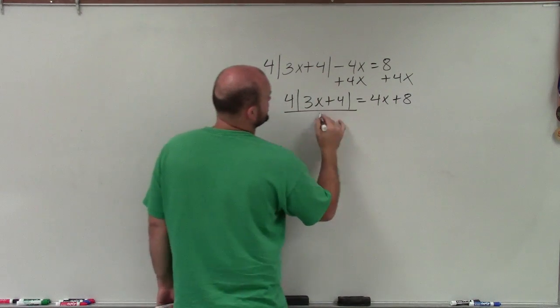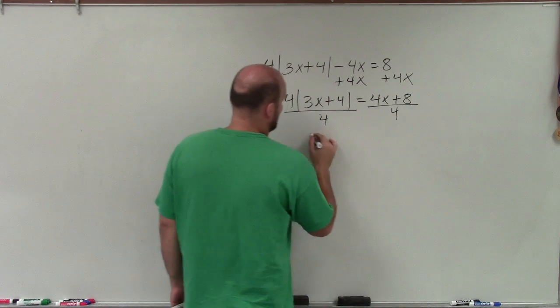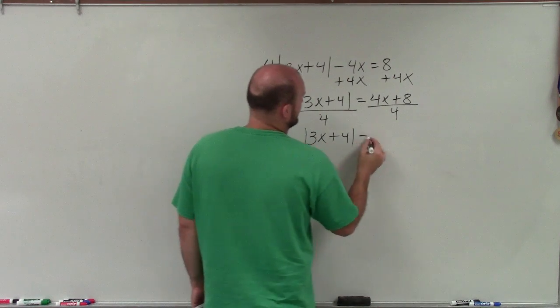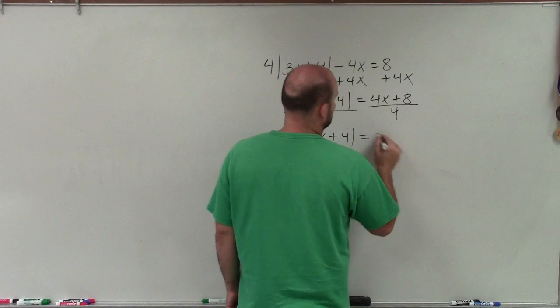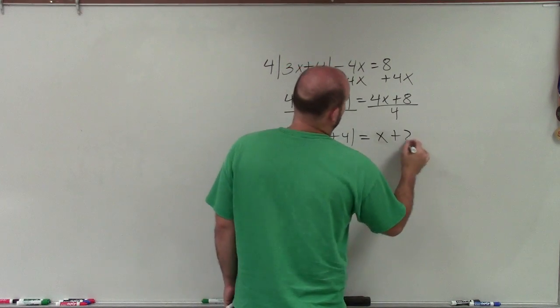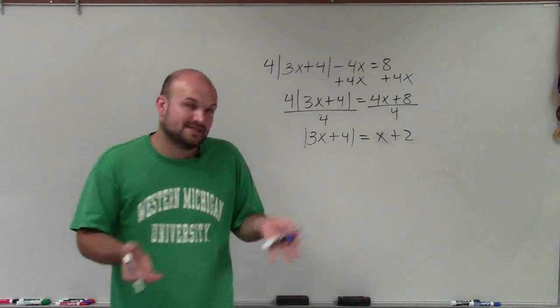Then I undo the multiplication of 4, so I divide by 4. And I have absolute value of 3x plus 4 equals 8 divided by 4, which is positive 2. Now you can see I have my absolute value isolated.